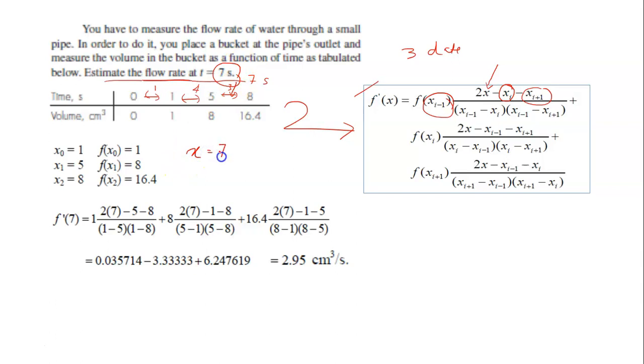Your x is 7. So now we have 1, 2, 3, 4, 4 data, right? The one that you want to determine is at 7 second. It's around here. So you only consider these 3 data.